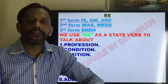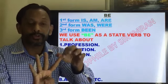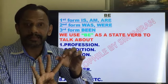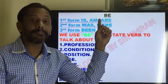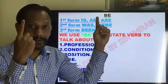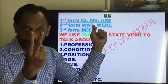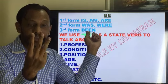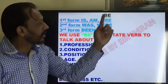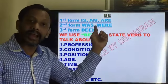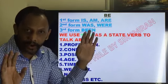As everyone knows, there are three forms of a verb — like go, went, gone; do, did, done; play, played, played. In the same way, the be verb has three forms. The first form of be verb is is/am/are; the second form is was and were; and the third form is been. Just as we say go, went, gone — in the same way we use is/am/are, was/were, and then been.